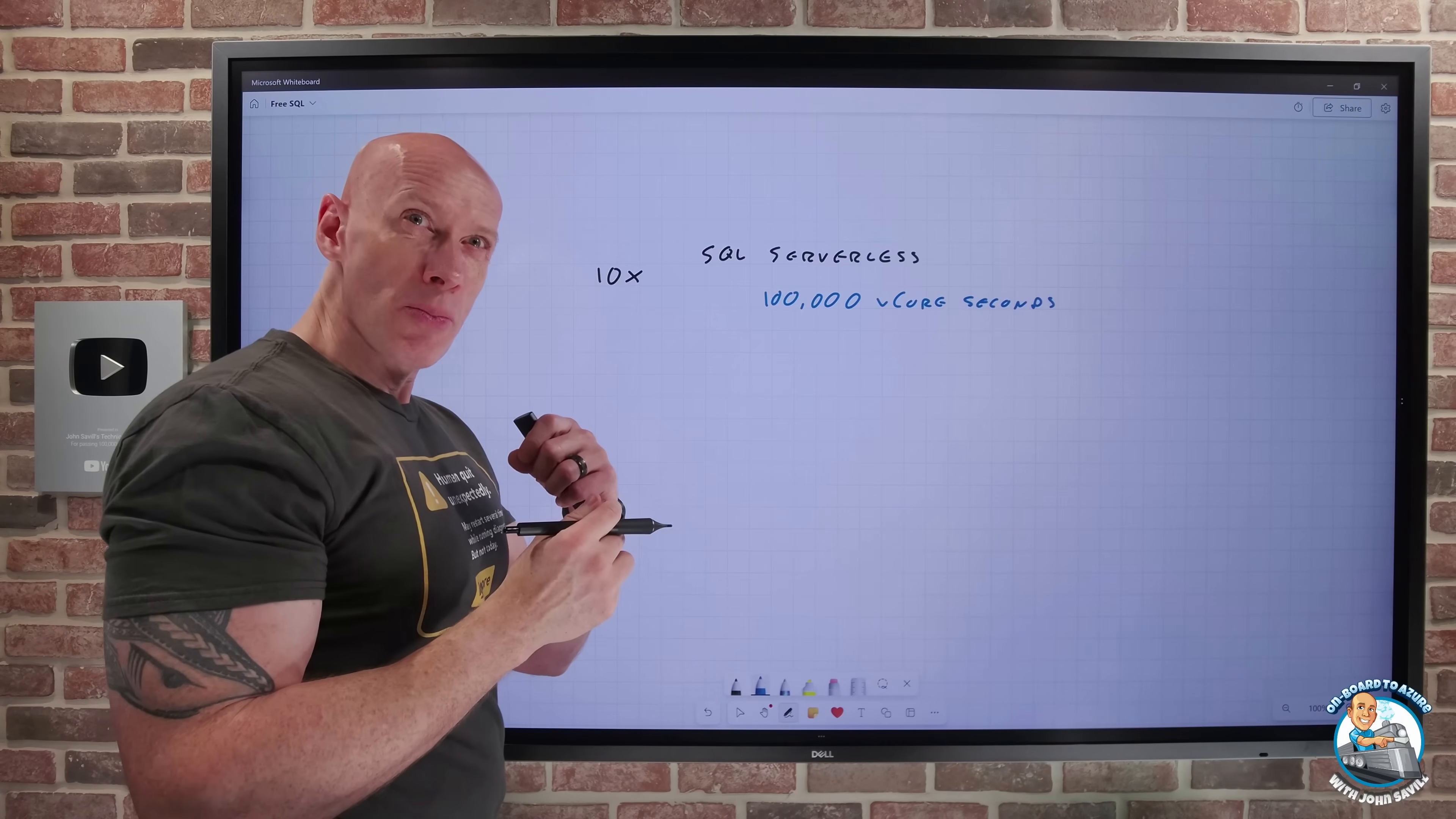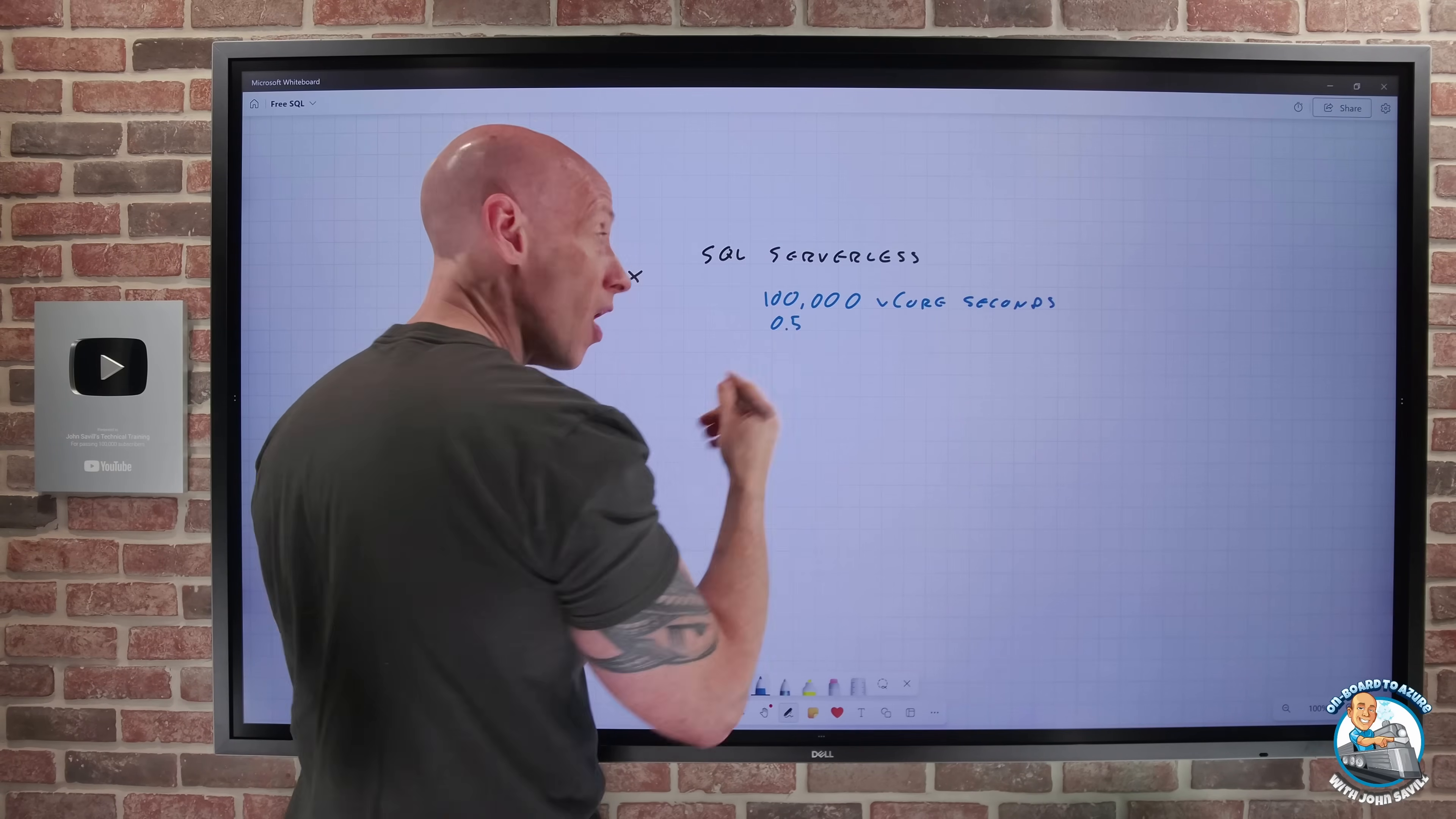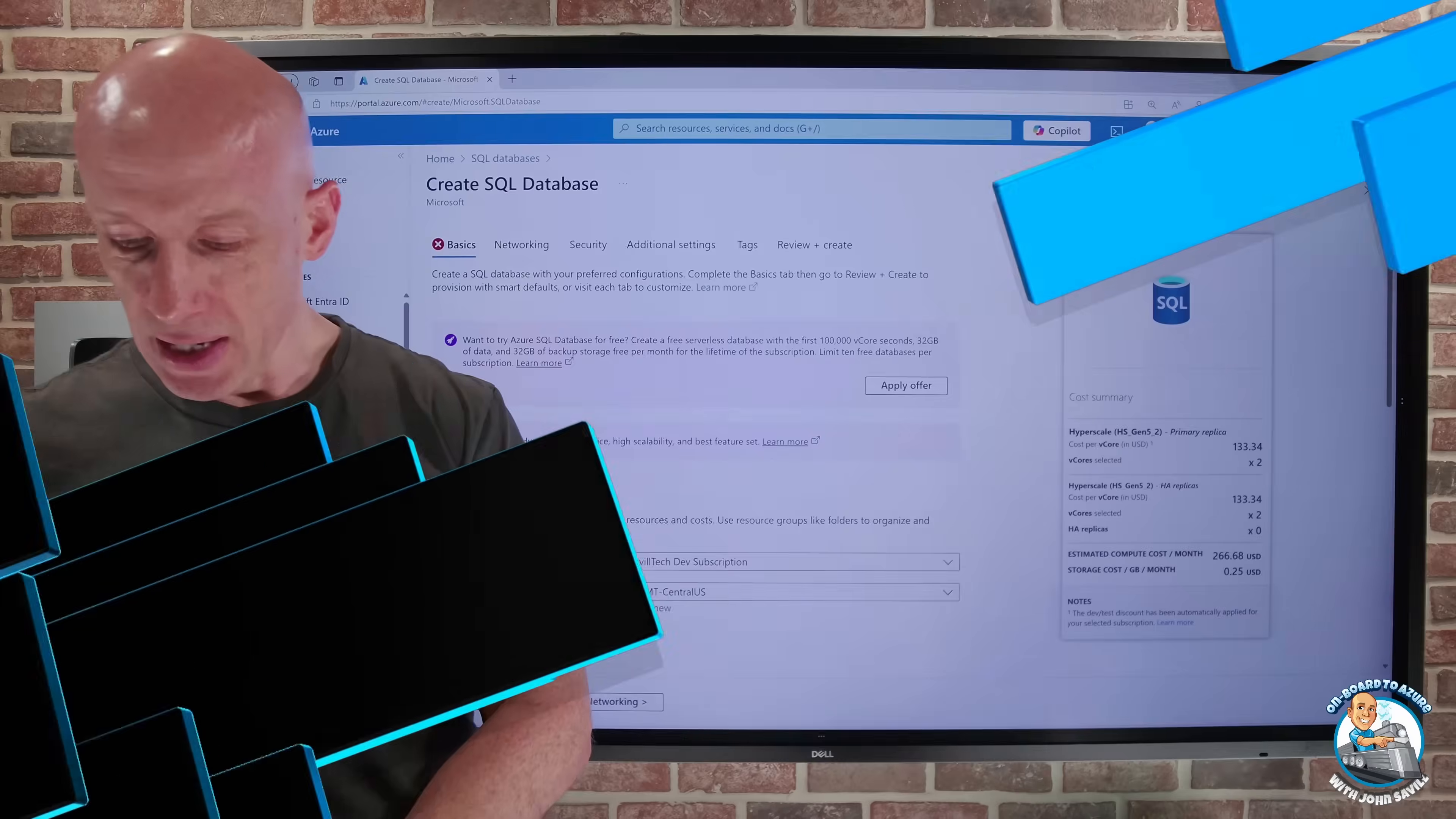Because if I choose the option to only be able to use that 100,000 and then stop for the remainder of the month, because this 100,000 is per month, well, my actual instance could be, for example, half a vCore, so I'd get 200,000 of elapsed time seconds, up to greater numbers for if you use the auto-pause. In fact, we can see this. So if we jump over really quickly,